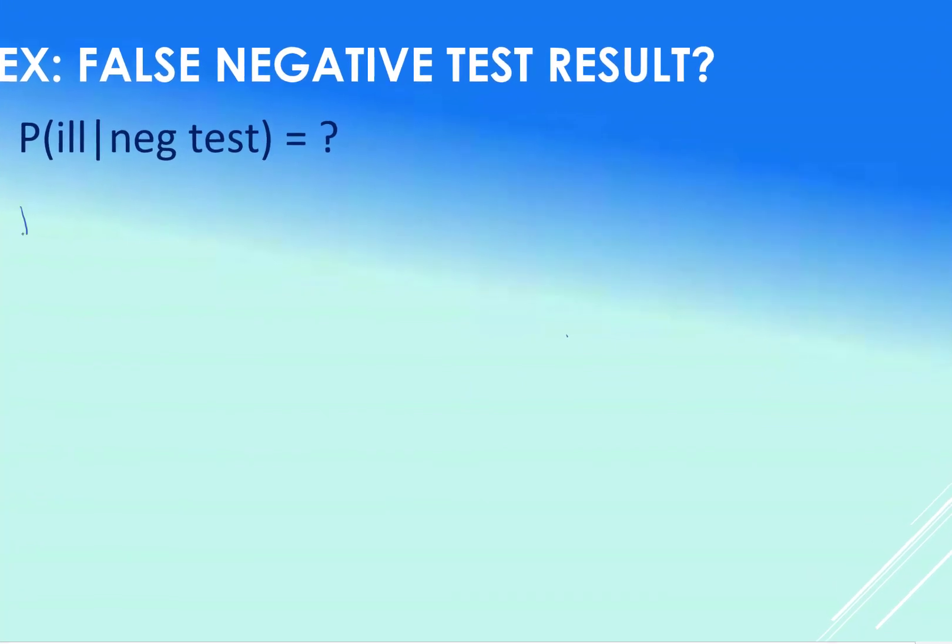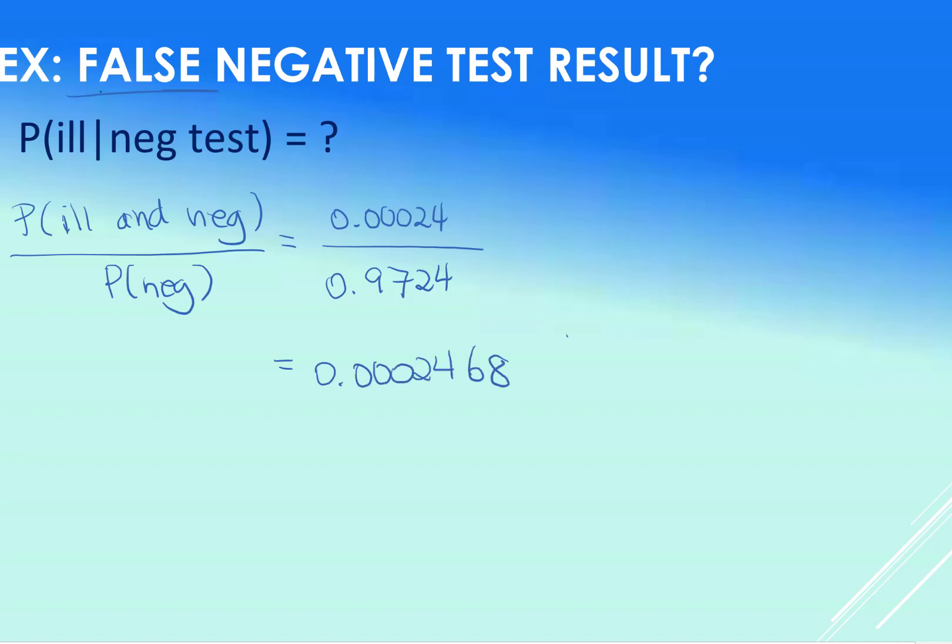Okay, two more to look at here, just to keep going and look at all of the possible ones. So ill given negative test. So that's ill and negative on the top divided by negative on the bottom. Odds of negative, again, we have that 0.9724. Ill and negative was 0.00024. Divide those by each other, we get 0.0002468.